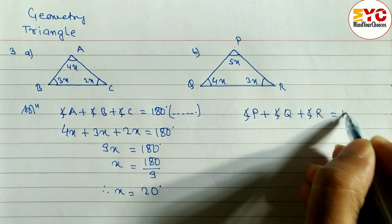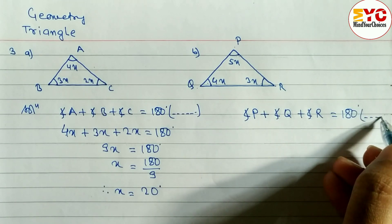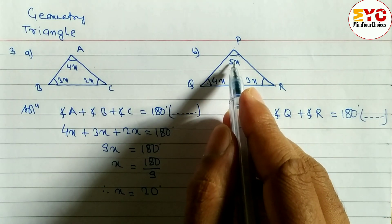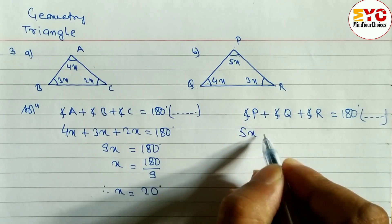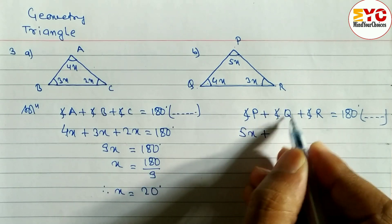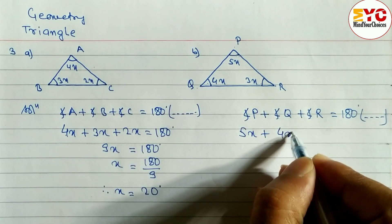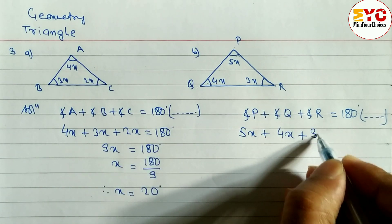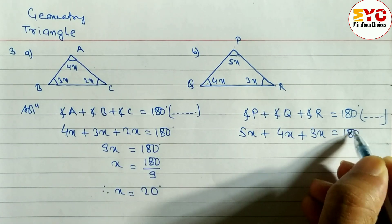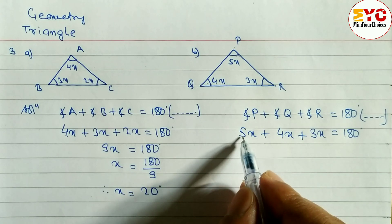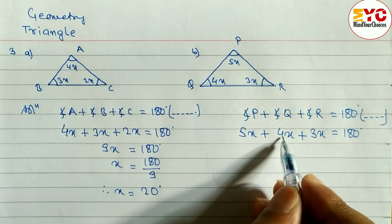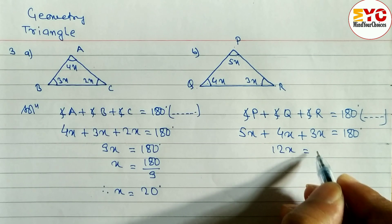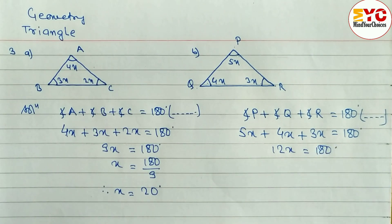Angle P plus angle Q plus angle R is equal to 180 degrees — sum of angles of the triangle. What is the value of angle P? It is 5x, so we write 5x. Angle Q is 4x, and angle R is 3x. So 3x is equal to 180. Now let's add all: 5 plus 4 is 9, 9 plus 3 is 12, so we have 12x is equal to 180 degrees.